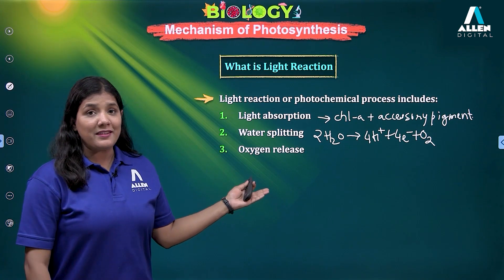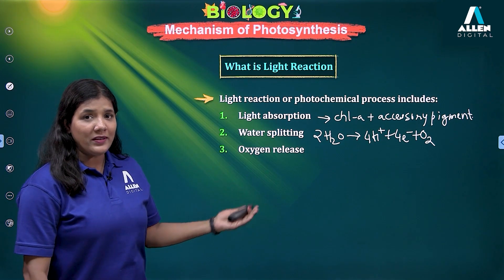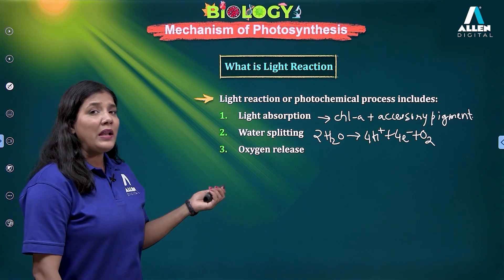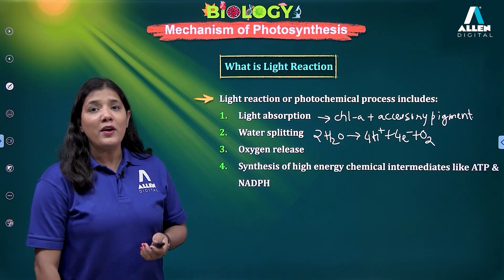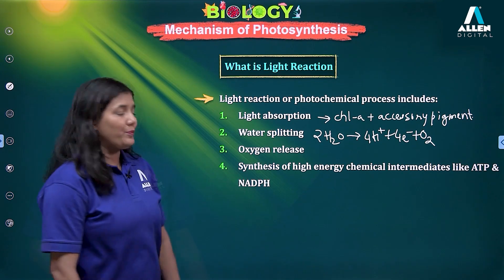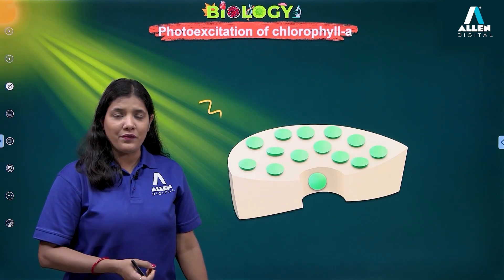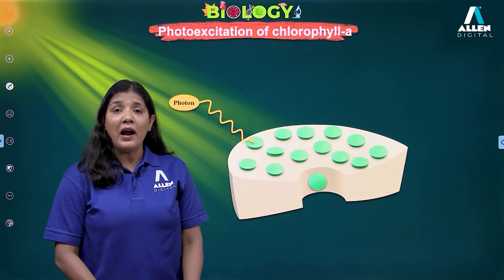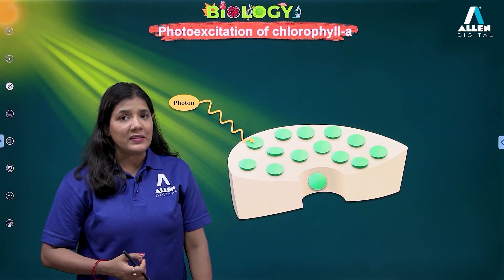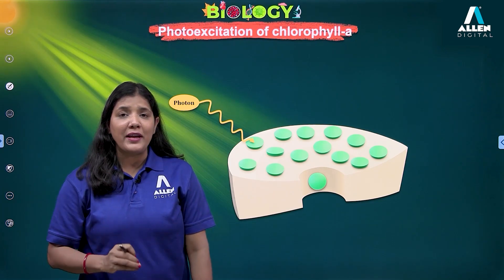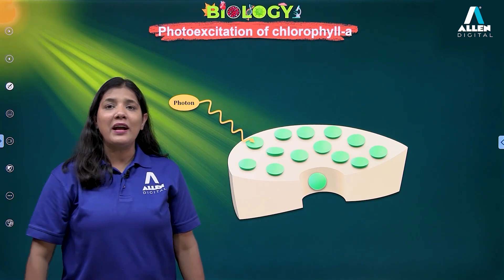Oxygen will be released and it is given by the water. Next, if the light energy is trapped, it will be converted into an intermediary form which is ATP and NADPH2. Now we will be learning about the photo-excitation of the chlorophyll A molecule — how the photons of light, the solar energy, will be trapped by the accessory pigments, and the exact wavelength of light will be given to the reaction centre, which is going to release the electron.